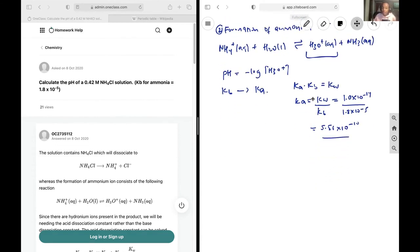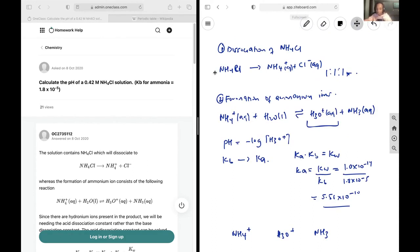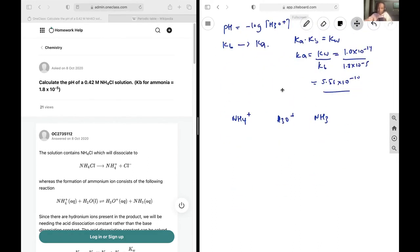Okay, now next up we're going to need an ice table for this reaction to figure out what the concentration of those hydronium ions is. And so NH4, H3O plus, NH3. Now we already know what concentration we start with of NH4 plus, and the reason for that is because of the 1 to 1 ratio here. So 0.42 to 0.42. We have 0 of this and 0 of this.